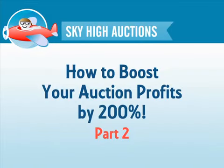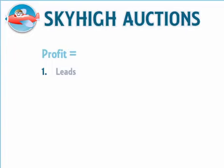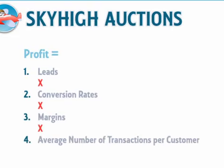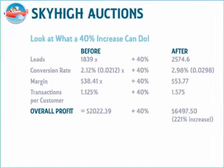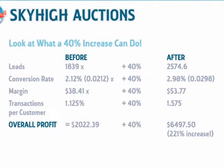Welcome back to the second part of the Sky High Auctions mini-series on how to boost your online auction profits by 200% or more. In the last video, we looked at the four main factors that make a profit in your online auction business: leads, multiplied by conversion rates, multiplied by margins, multiplied by the average number of transactions that each customer makes with you. We also saw how a small increase in each one of these can have a dramatic effect on your overall profit. In today's video, we're going to be focusing on the first part of the four fundamentals of profit: how to increase your leads.